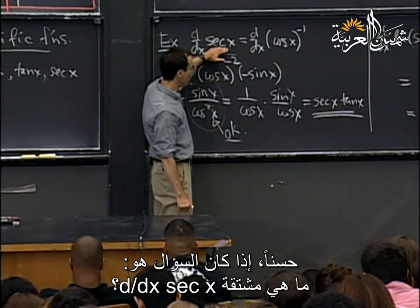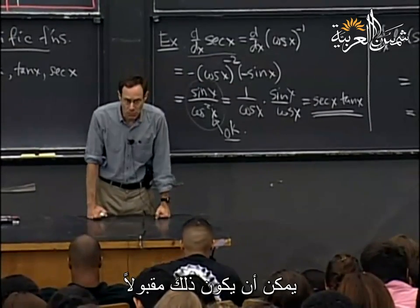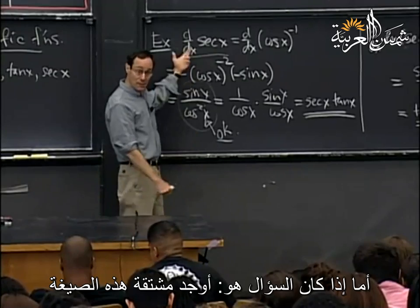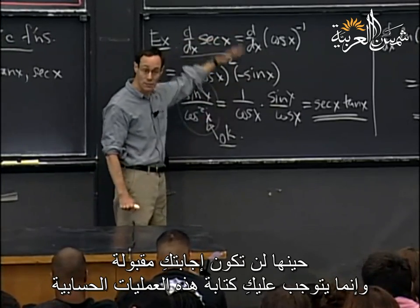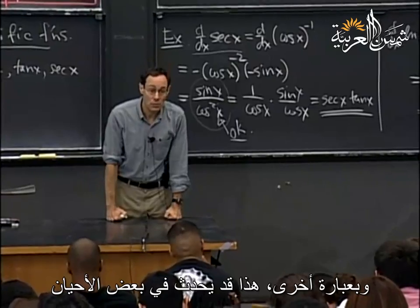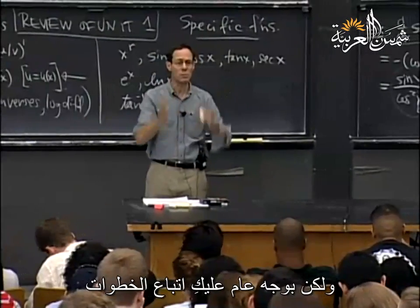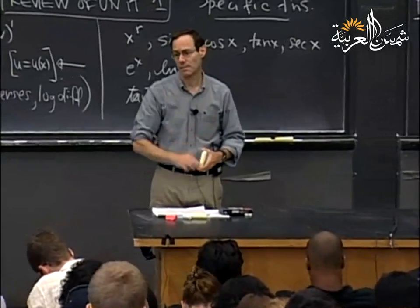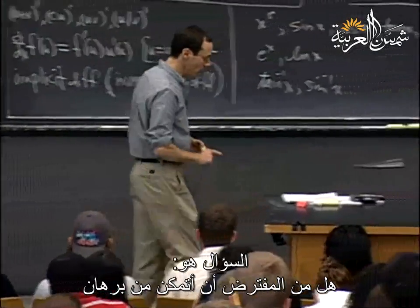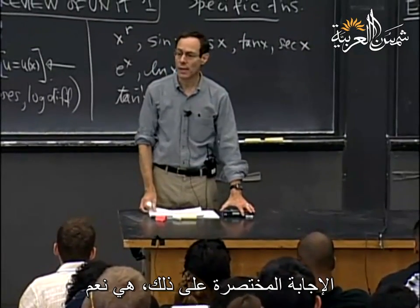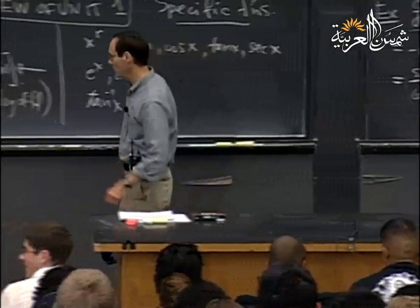A student asked about showing work. If I ask for d/dx of sec x and you write the correct answer showing no work, that's acceptable. But if the question says 'derive the formula from the derivative of cosine,' then you'd have to carry out the arithmetic. Another question: are you expected to prove the derivative of sine? Yes — I'll get to that when I discuss the rest of the material. We're almost there.